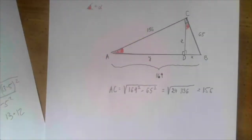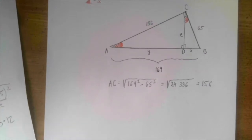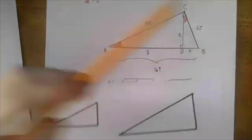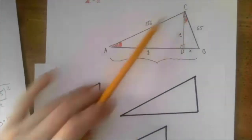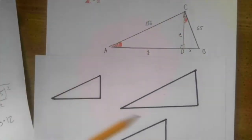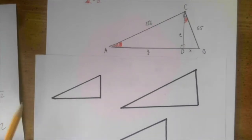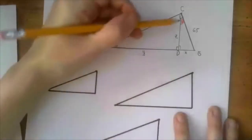We have to solve for x, y, and z. The first thing I noticed is that we have two sides of a right triangle given, which means we can easily find the third side by the Pythagorean theorem. Side AC has to be the square root of 169 squared minus 65 squared, which is the square root of 24,336, which is 156. Now we have the original triangle with all three sides known, which is very good for solving with ratios.